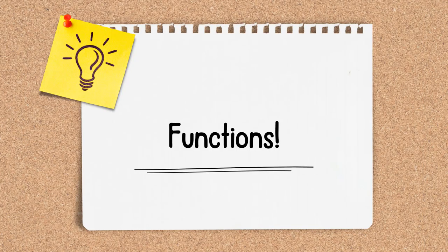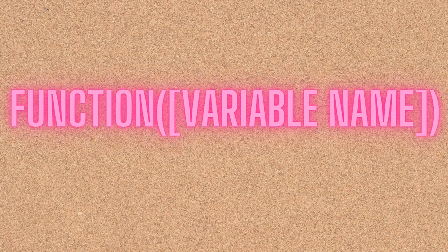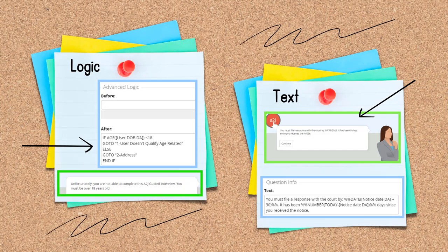Macros are a way to display data given to you by the end user, but functions are a way to manipulate that data. All functions follow the same formatting rules: the name of the function in all caps, then parentheses, then the variable name wrapped in brackets. Technically you only need the brackets if your variable name has a space in it, but for safe measure always wrap the variable name in brackets. Functions can be used throughout your interview in all text fields — pages, learn mores, and pop-ups — as well as in the logic section.